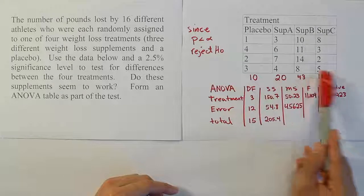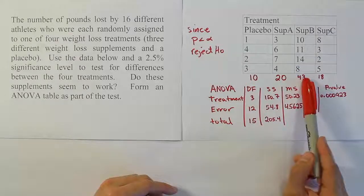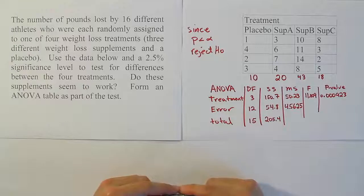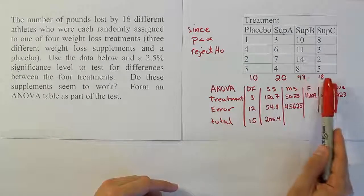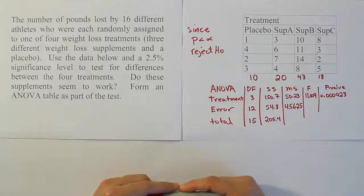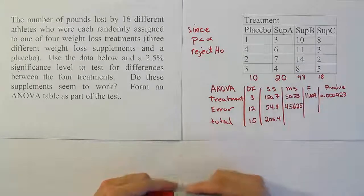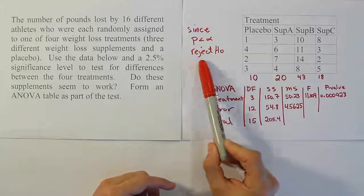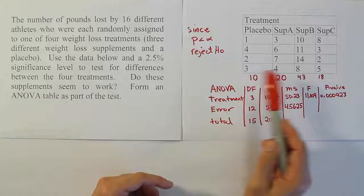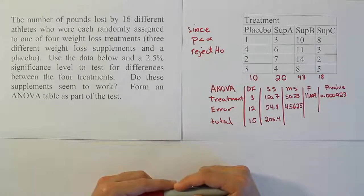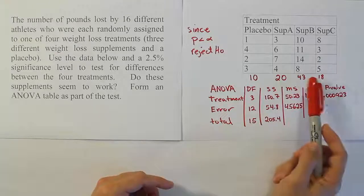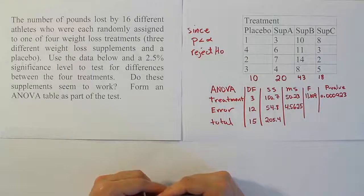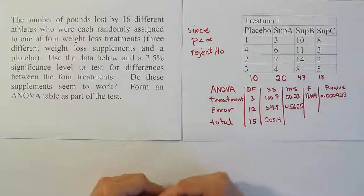If we're saying that at least one pair of these supplements is significantly different from one another, we have to at least conclude that — worst case scenario — it's got to be the placebo and the highest, in this case the placebo and Supplement B, because this is the smallest treatment value and this is the largest. So if there's going to be a difference between one pair, then those two would have to be significantly different. So I can certainly say that Supplement B outperforms the sugar pill, the placebo.